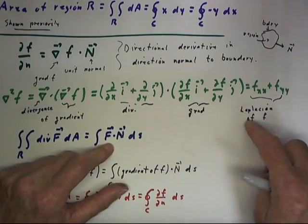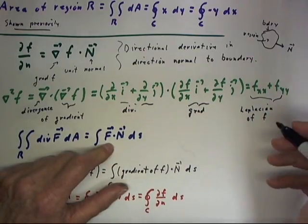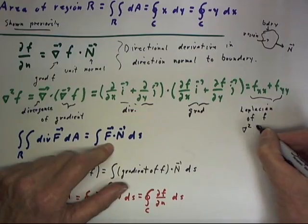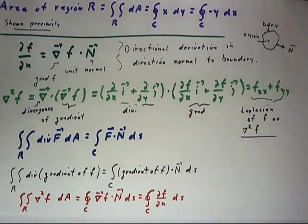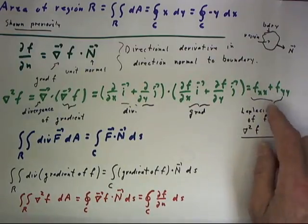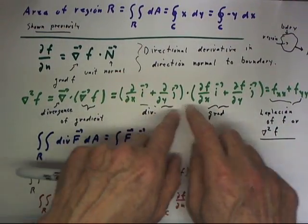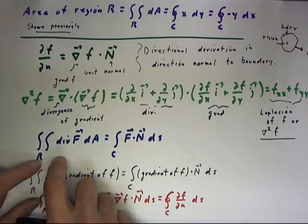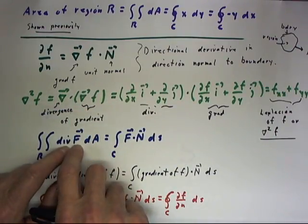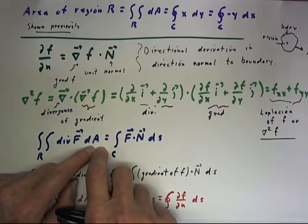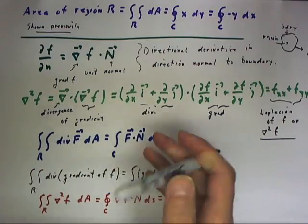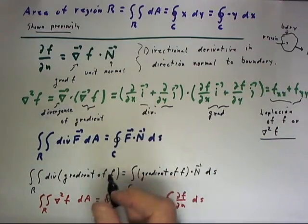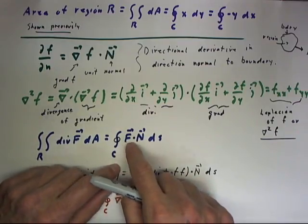We give this a name: we call it the Laplacian of f, written del squared f. Now, this Laplacian del squared f is, as we've seen, a divergence of something. We know that the integral over a region of the divergence of a function integrated with respect to area is equal to the integral over the closed boundary curve of f dot n.